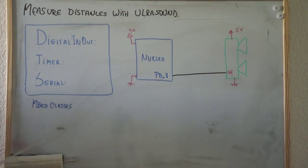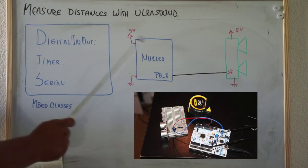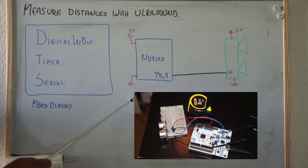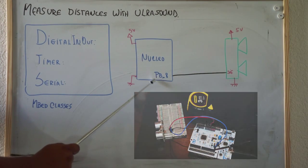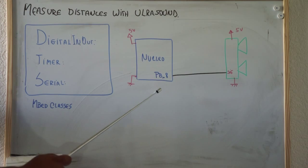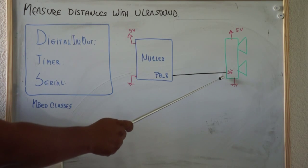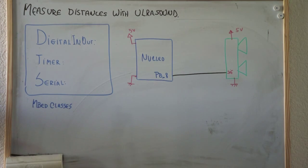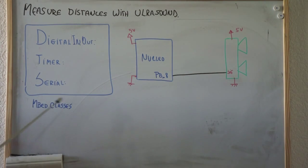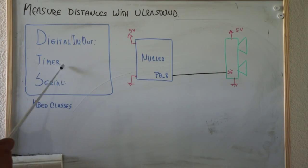So in this lab, what we're going to do is connect the Nucleo board through pin PB8 directly to the SIG pin of the ultrasonic sensor. We're going to see three new classes: DigitalInOut, Timer, and Serial.